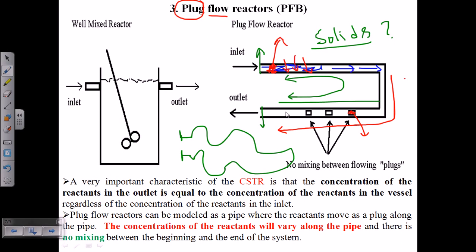This fermenter does not have homogeneous mixing. A plug from one region will vary in its concentration of reactants, consistency of components, and concentration of different materials compared to plugs from other regions. The properties of the material vary continuously from one region to another inside this plug flow bioreactor.